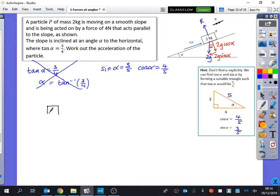I would probably still want to draw another diagram at this stage. Forces coming up from the plane are R. What forces do I have acting up the plane? We have 4 going along like this. Down, I have 2G cos α. And left, I have 2G sin α.